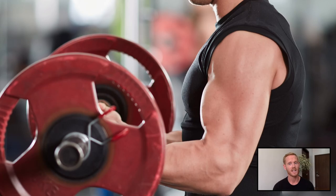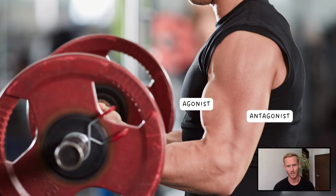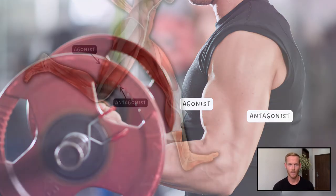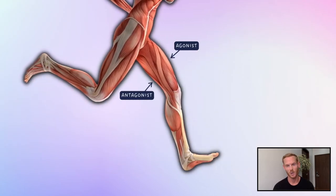For example, during the upward phase of a bicep curl, the biceps take on the role of the agonist, contracting and shortening to create flexion at the elbow. Meanwhile, the antagonist, the triceps, relax and lengthen to allow the movement to occur. When bending the knee, the hamstrings contract and shorten while the quadriceps relax and lengthen. As the knee extends, the quadriceps contract and hamstrings relax accordingly.